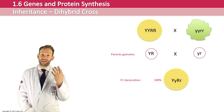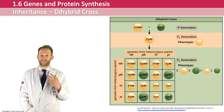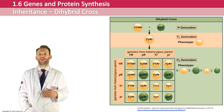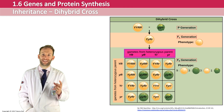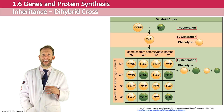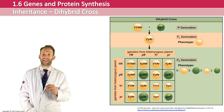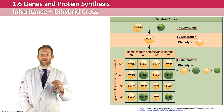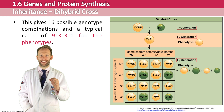If we interbreed those F1 heterozygotes and put them into a Punnett square, there are four different gametes possible: big Y big R, little y big R, big Y little r, or little y little r. This gives a four-by-four Punnett square in this classic dihybrid cross, producing 16 possible genotype combinations and the classic Mendelian phenotype ratio of 9 to 3 to 3 to 1. We would expect to achieve this ratio with a large enough sample size.